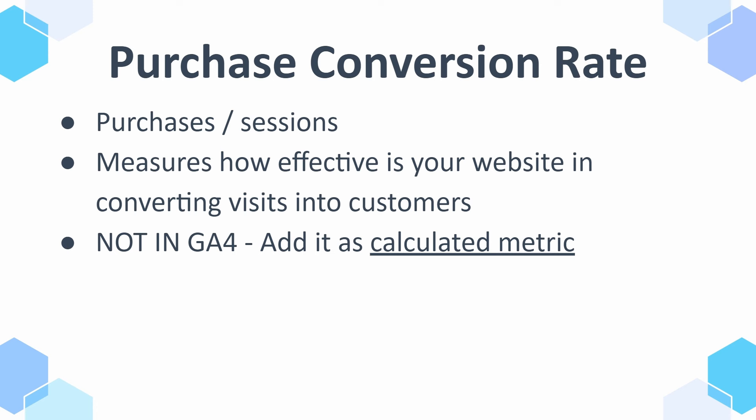To add this to your GA4, you need to use something called a calculated metric. It's pretty simple — you do it in your admin panel in GA4 and it takes about three minutes to set up. If you want to learn how to do that, click in the top right corner; there's a banner that'll take you to that tutorial.